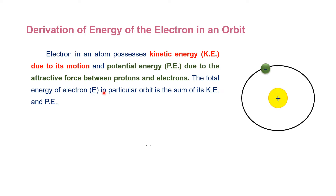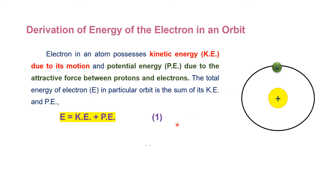We know that the electron can possess both kinetic energy and potential energy. Kinetic energy of an electron is due to its motion in an orbit, while the potential energy of an electron is because of the attraction with the nucleus. If we want to calculate the energy of an electron, we will sum up both the kinetic energy and potential energy. The kinetic energy is equal to half mv², where m is the mass of electron and v is the velocity of electron.